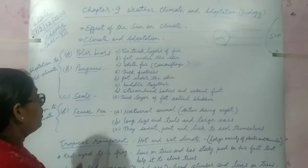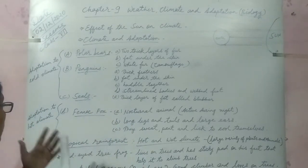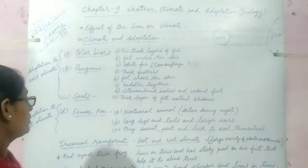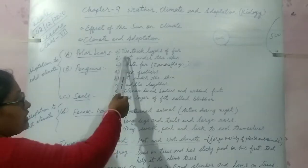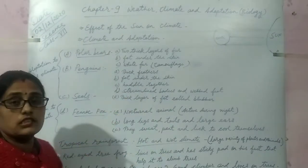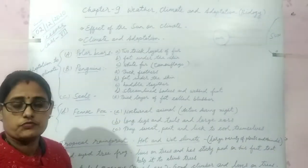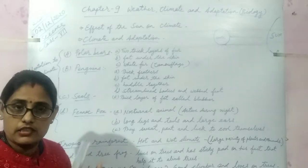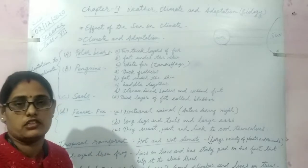First of all we are going to discuss about the animals who are well adapted to live in cold climate like polar regions. The first one is polar bears. It has two thick layers of fur, fat under the skin known as blubber, white fur which helps in camouflage so that it can hide from predators and also helps in catching prey.